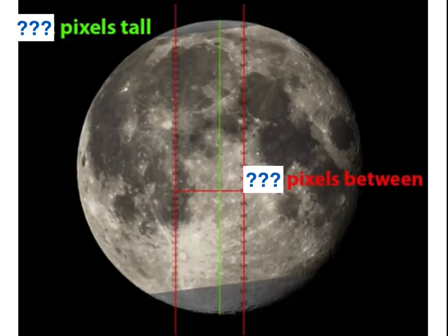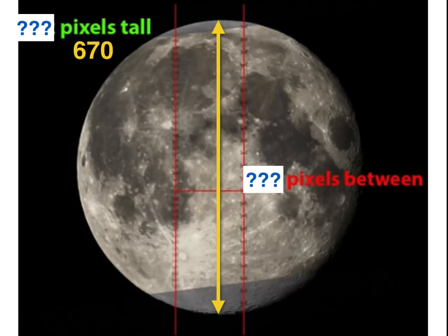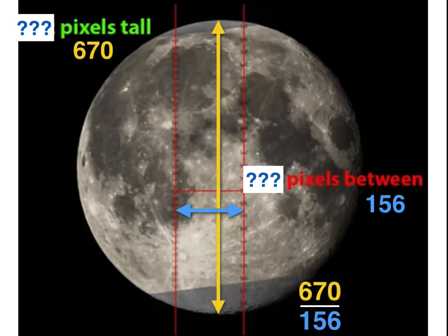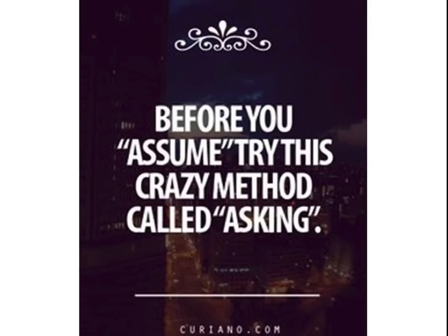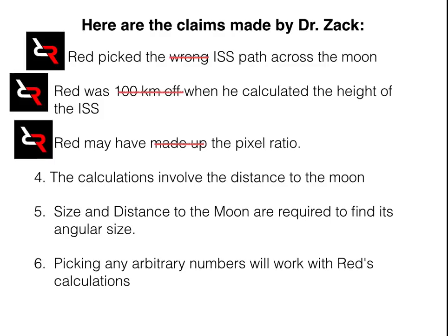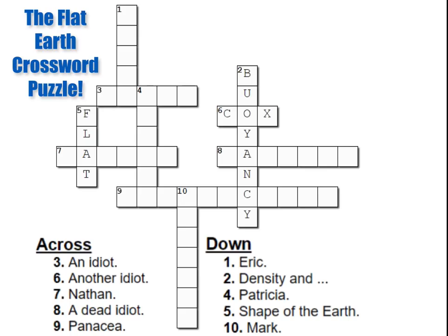We're not going to trust his numbers at all — we're going to throw his numbers out the window and actually measure this ourselves. Using Apple Keynote, I measured the pixels to be 670 pixels tall and 156 pixels wide, literally off my screen. I made my own pixel ratio and found it to be 4.29. Where have we seen 4.29? That's right — it's the pixel ratio that Red claimed. There's danger in assuming things. It doesn't look like he made up that pixel ratio — looks like he measured it.